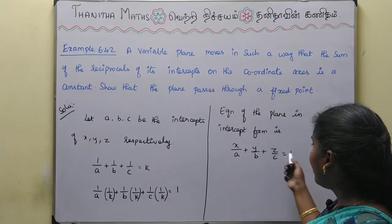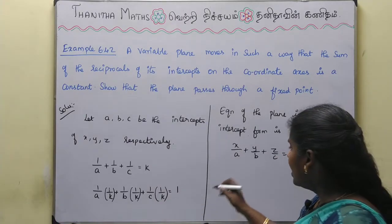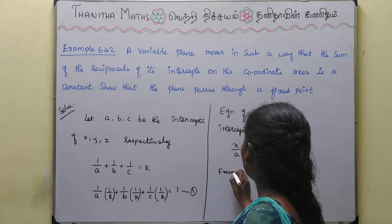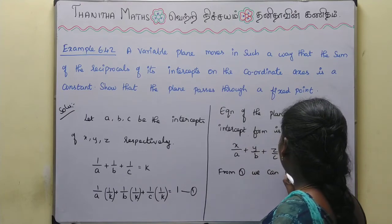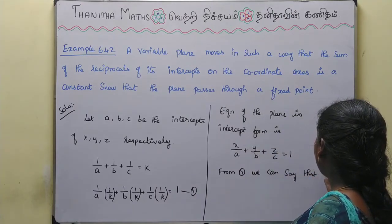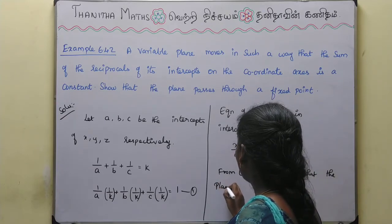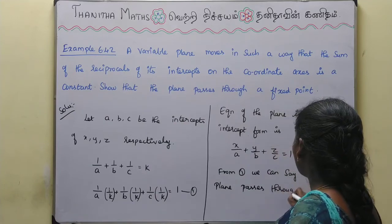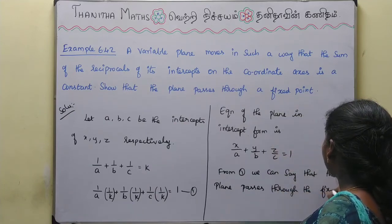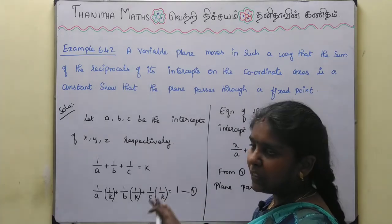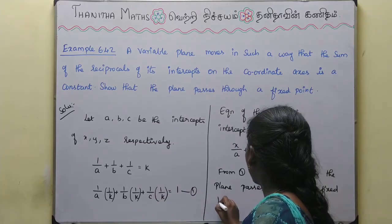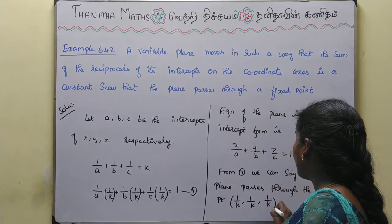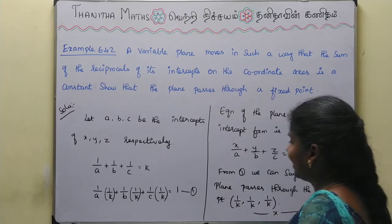The x, y, z values are all equal to 1/k. Through this, the plane passes through the fixed point. K is constant, so the fixed point is x = 1/k, y = 1/k, z = 1/k. That means the fixed point is (1/k, 1/k, 1/k). Hence proved.